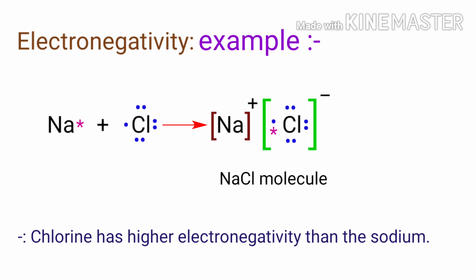In a sodium chloride molecule, the chlorine atom has a higher electronegativity than the sodium atom, so the bonding electrons will be closer to the chlorine than to the sodium in the sodium chloride molecule.